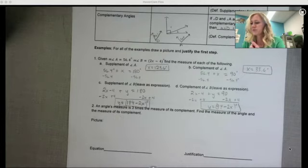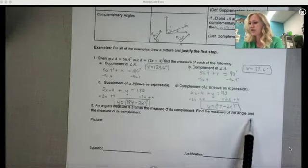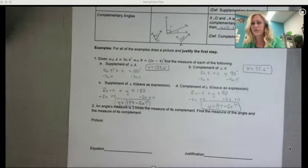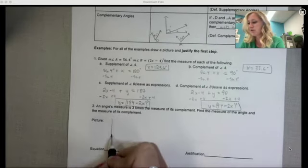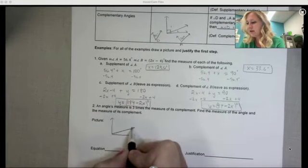Okay, this one we know an angle's measure is three times the measure of its complement. Find the measure of the angle and the measure of its complement. So we know complement means that together they're adding to be 90 degrees. So I'm going to draw two angles adding to be 90.